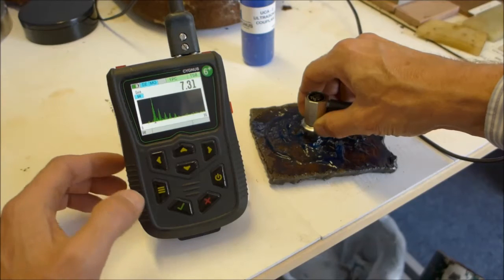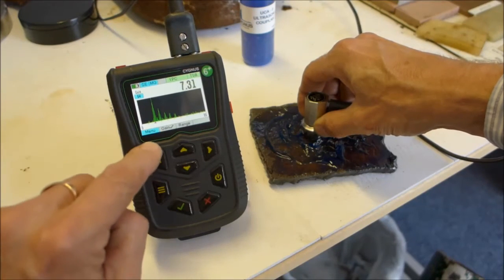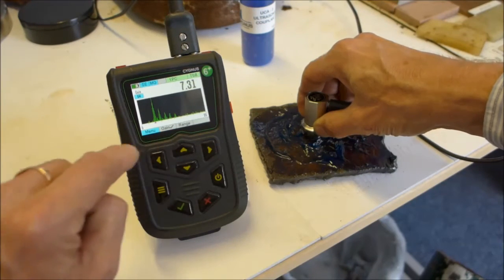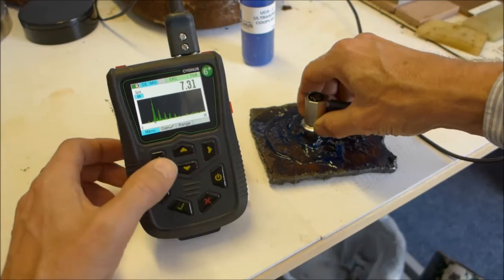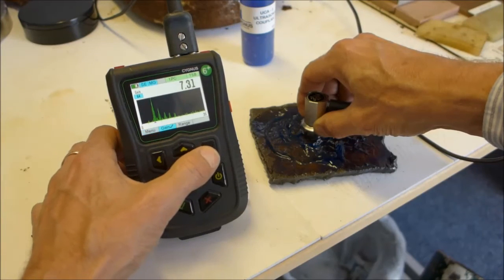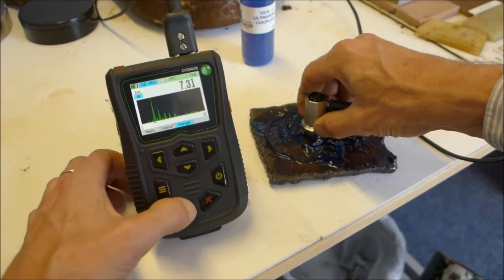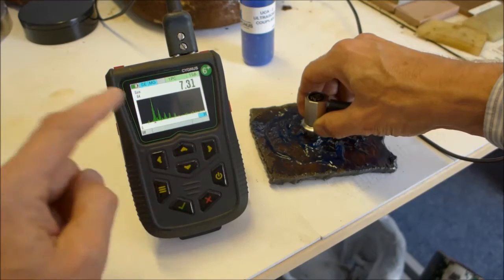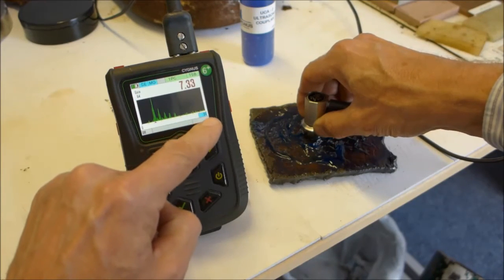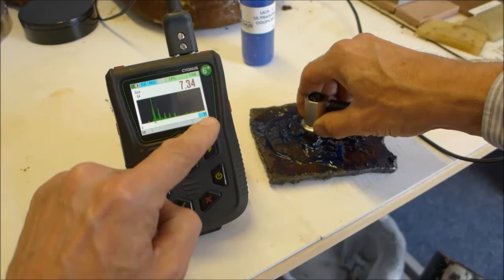Now if I want to adjust the range, I press the menu and I get this little menu which appears at the bottom just in manual gain mode. I can now scroll along and select range and click OK. And now the box showing me my range on the A scan is highlighted.